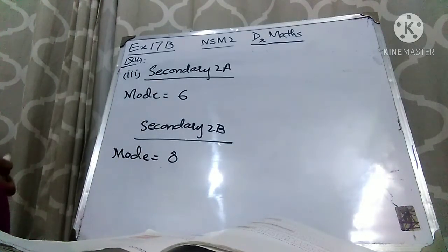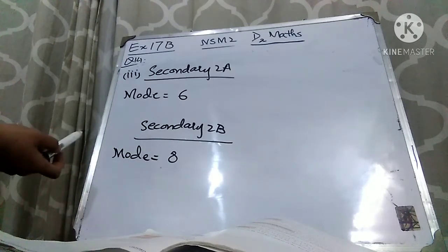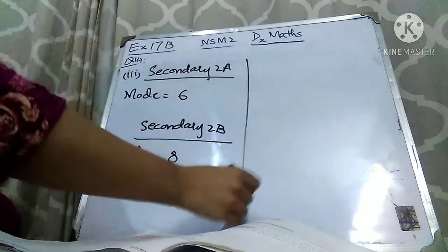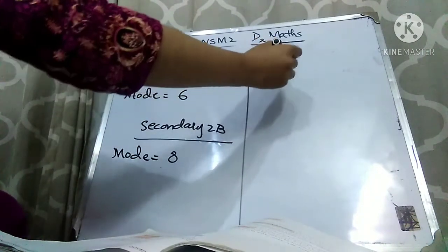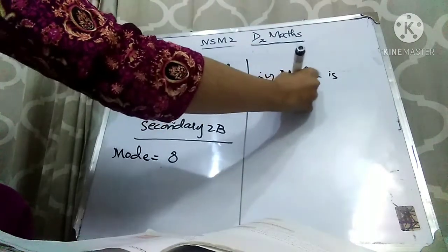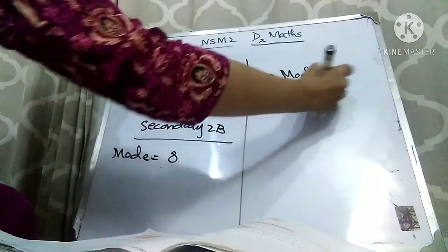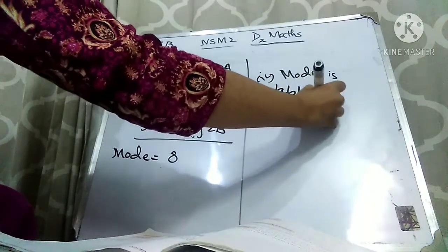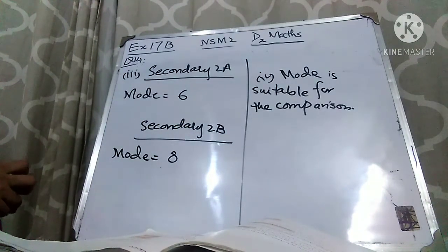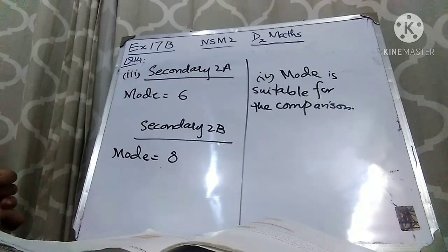In part 4, they ask: does the median or mode give a better comparison of the number of pull-ups done by the students in the two classes? Explain your answer. The answer is: the mode is always best for comparison — mode is suitable for comparison. I hope this lecture is clear. Do the practice and the concept will become more clear. Take very good care of yourself. Thank you very much.